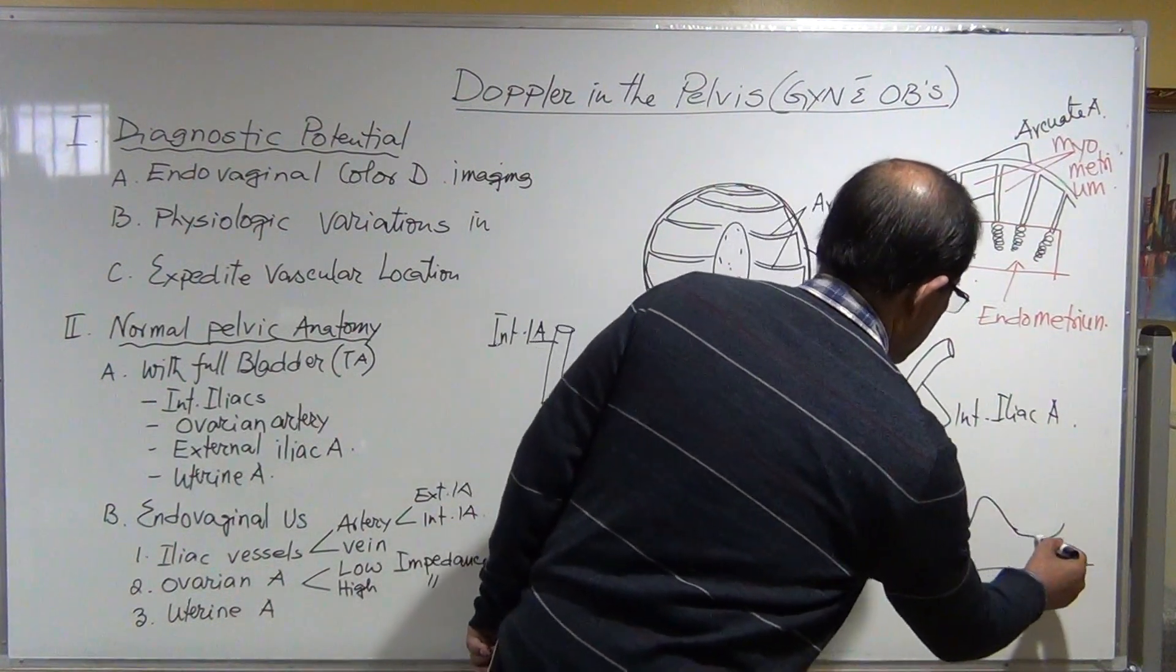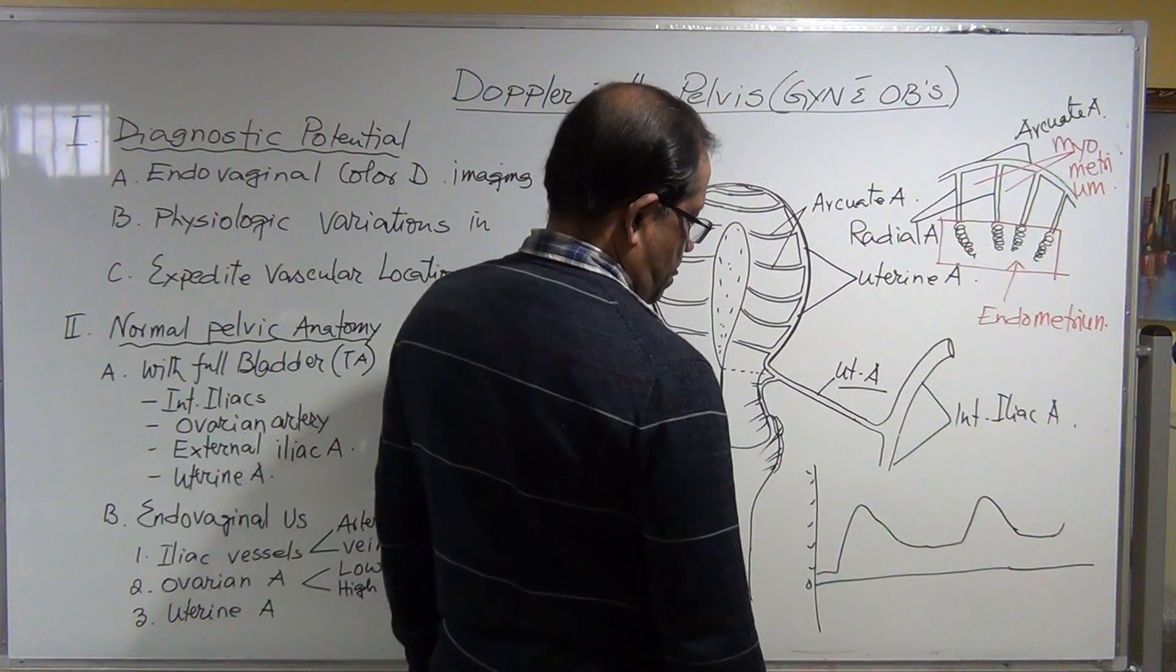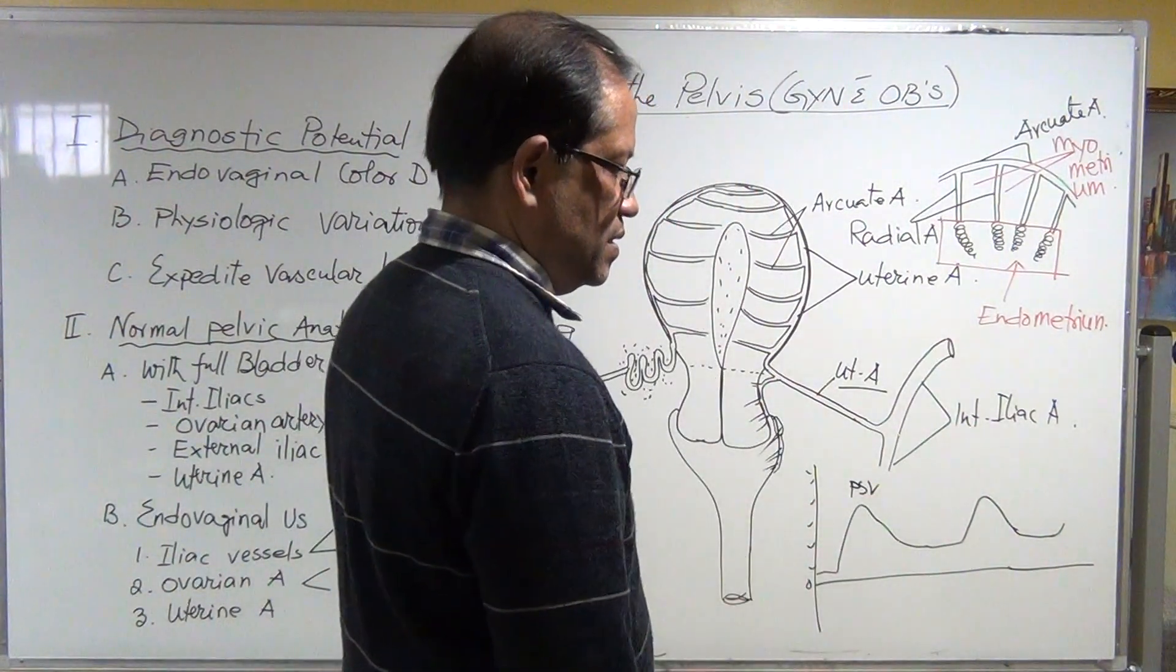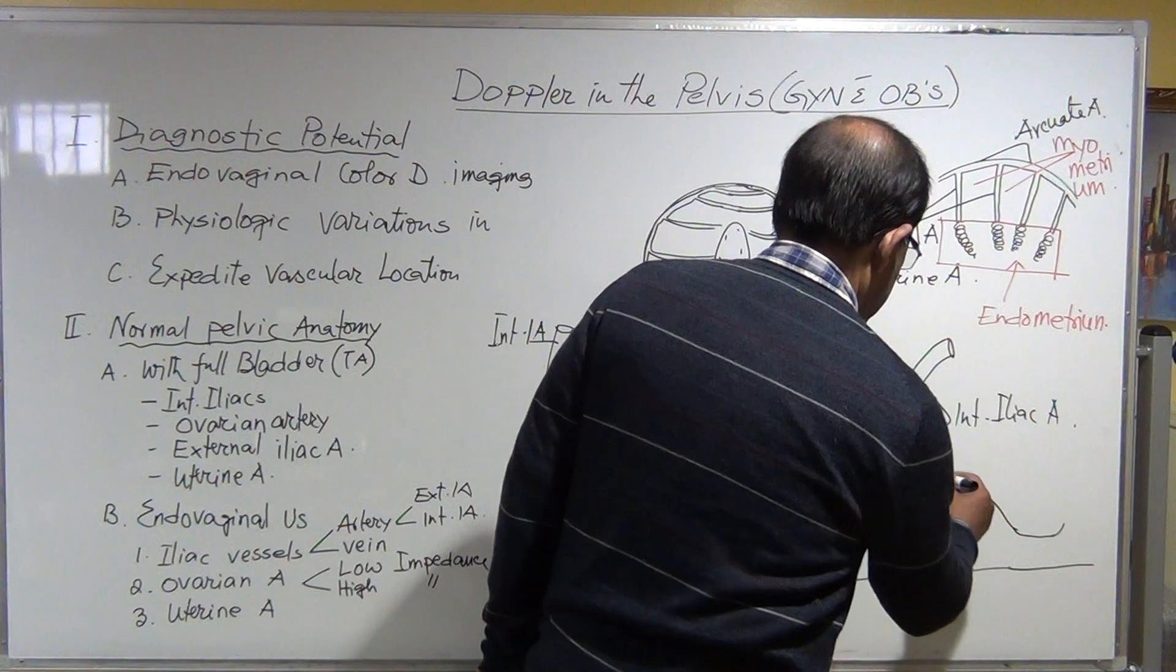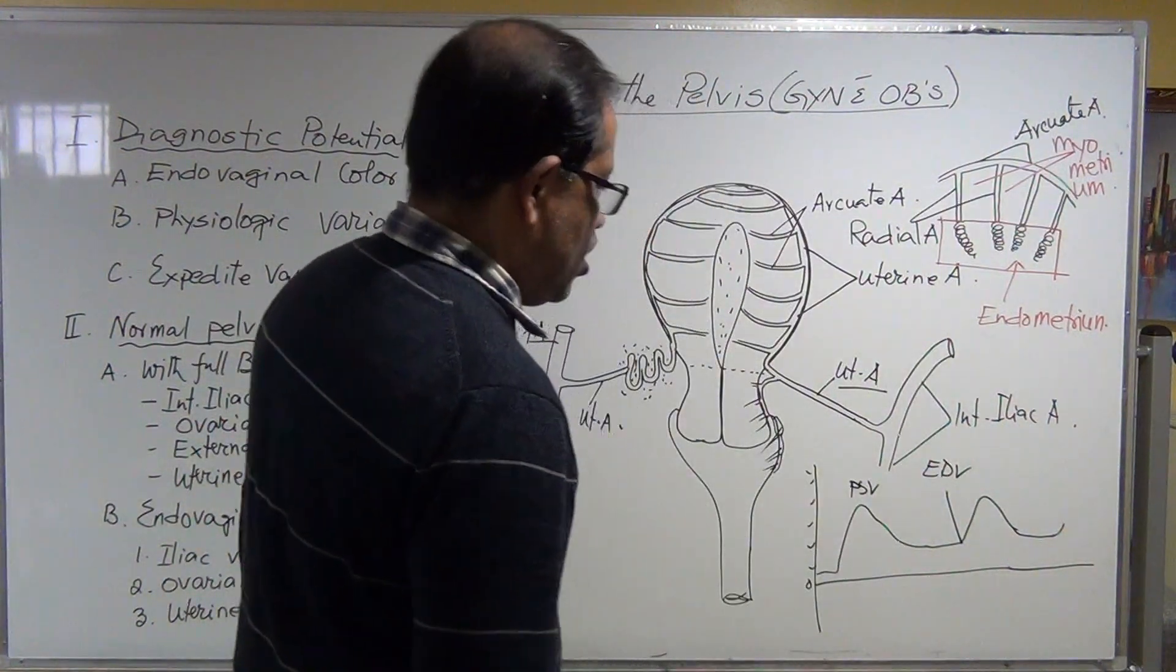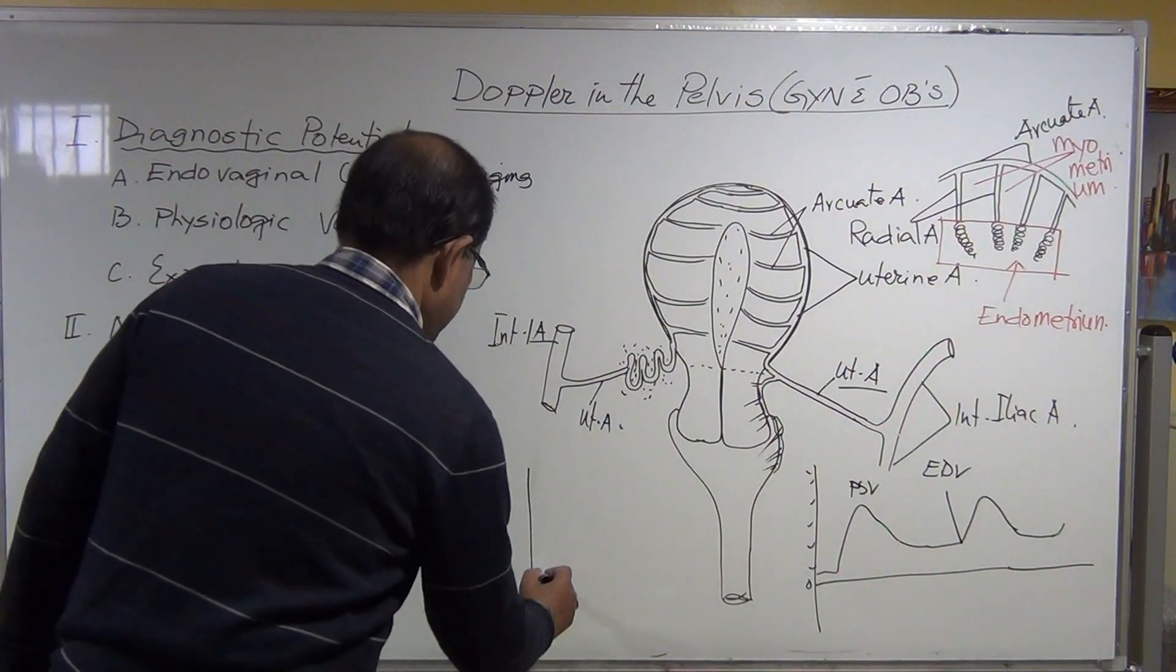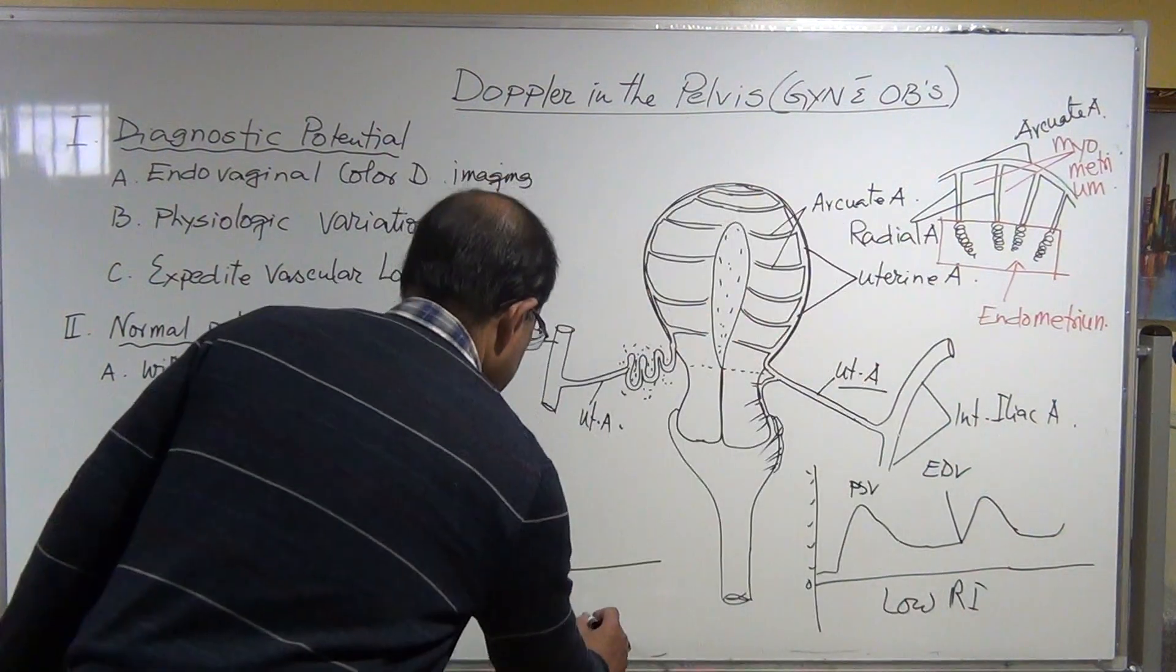If you do the Doppler, the peak systolic velocity in the uterine artery is low. It is low. The typing is low. You will see the peak systolic velocity, it is not very resistive, and end diastolic velocity has more flow even at the end of the diastole. That indicates the perfusion is good.